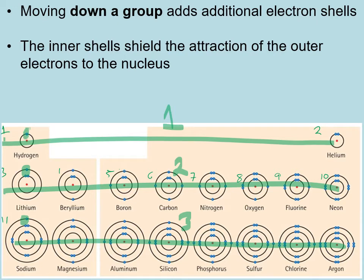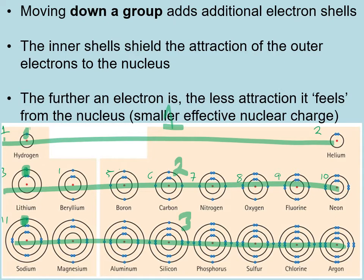The more inner shells there are, the less attractive force those outer electrons feel — and remember, it's the outer electrons that determine the chemistry of the atom. So the further away they are and the more inner shells blocking that force, the less effective nuclear charge those outer electrons experience. Moving down a group gives a smaller and smaller effective nuclear charge.